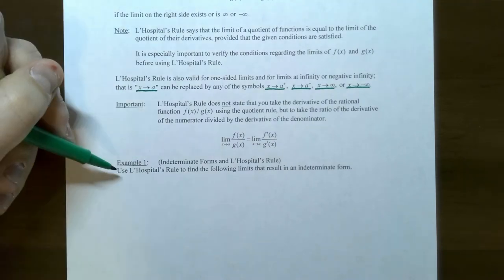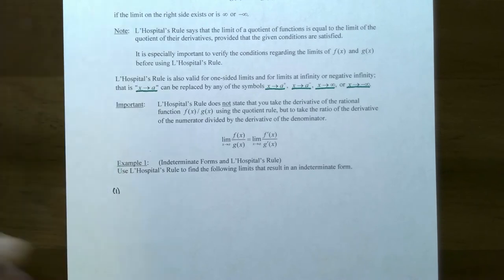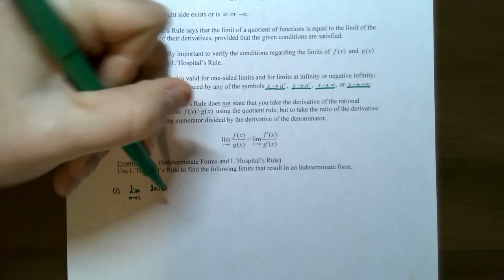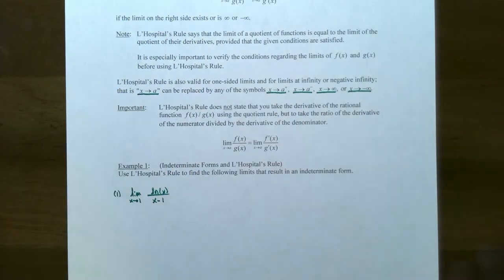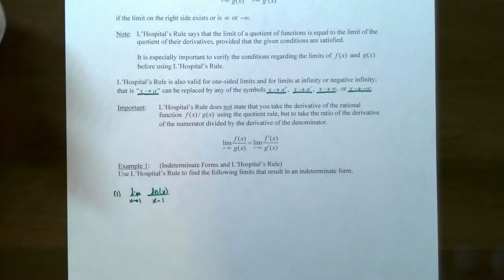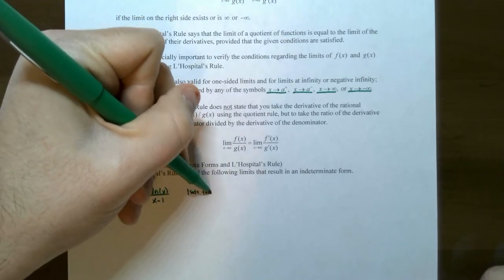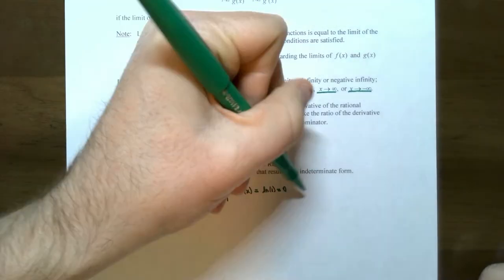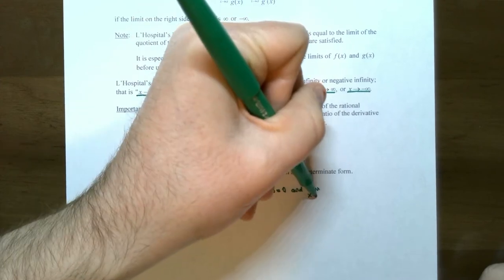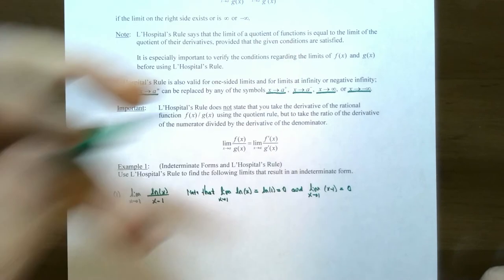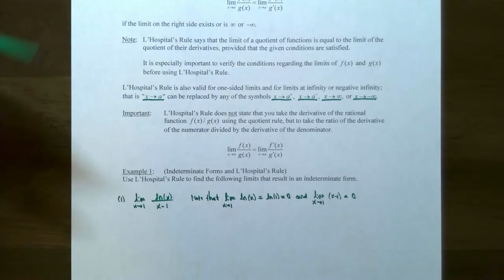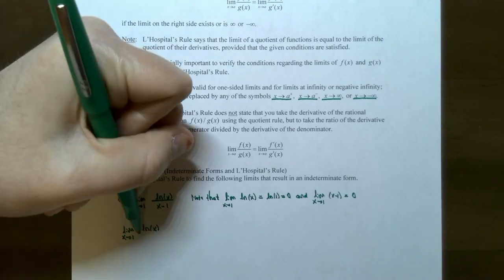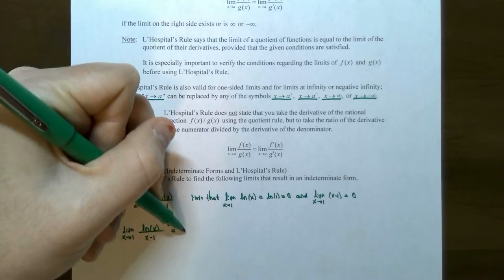Example 1: Find the limit as x approaches 1 of ln(x) divided by (x minus 1). First check conditions: the limit of ln(x) as x approaches 1 is ln(1) = 0, and the limit of (x minus 1) is also 0. So we have a 0/0 indeterminate form, and L'Hôpital's Rule conditions are satisfied. We can take the derivative of the numerator and denominator separately.